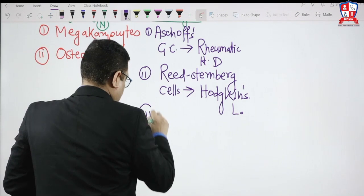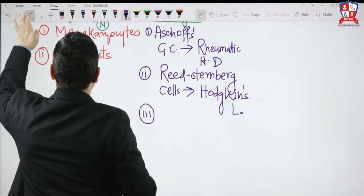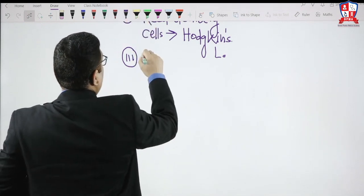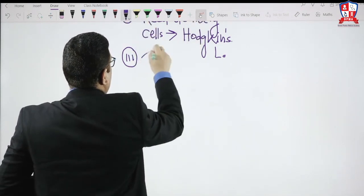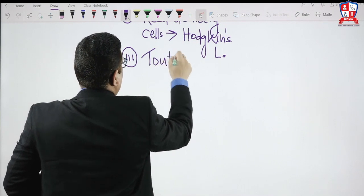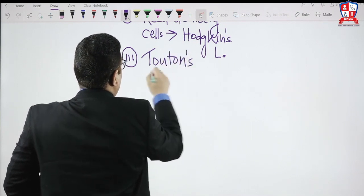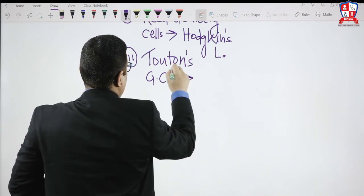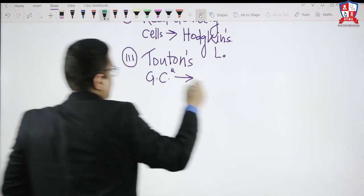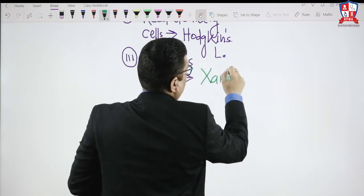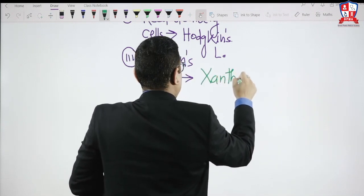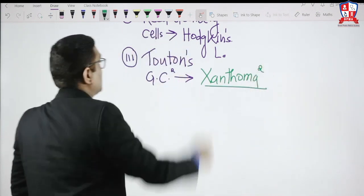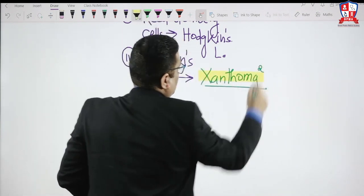The third type of pathologic giant cell to discuss is the Touton giant cell. This was a question in an older All India exam: Touton giant cells are seen in which condition? Remember, Touton giant cells are seen in Xanthomas. That was the right answer. This was a question in the All India exam.